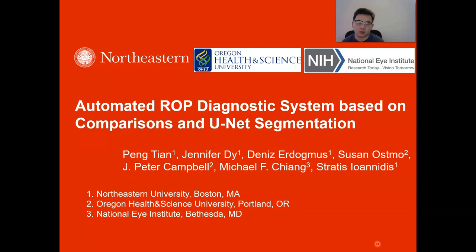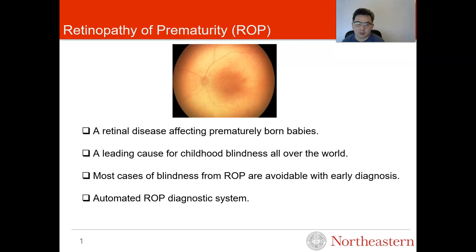Hi everyone, today I will introduce our work about an automated ROP diagnostic system based on comparisons and U-Net segmentation. Retinopathy of prematurity (ROP) is a retinal disease affecting prematurely born babies and is also a leading cause of childhood blindness all over the world. However, most cases of blindness from ROP are avoidable with early diagnosis, so an automated ROP diagnostic system can increase the chance of patients receiving proper diagnosis.